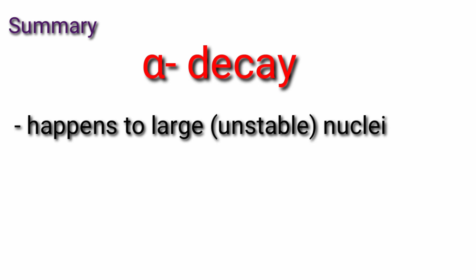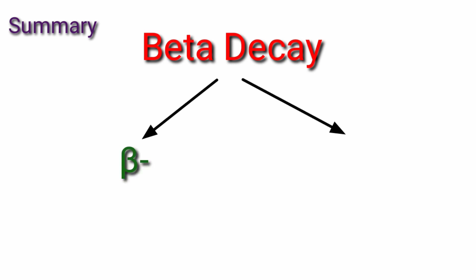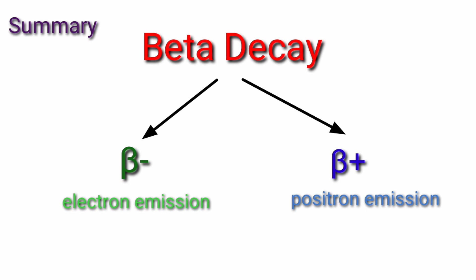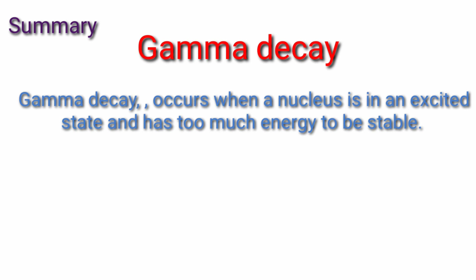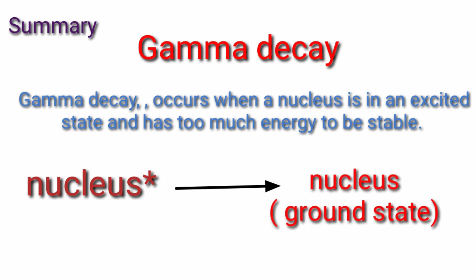To summarize: alpha decay occurs in large unstable nuclei where Coulomb force dominates the nuclear force. Beta decay occurs in two ways — beta-negative decay, where electrons are emitted when neutrons outnumber protons, and beta-positive decay, where positrons are emitted when protons outnumber neutrons. Gamma decay is the emission of high-energy nuclear photons or gamma rays from the nucleus when it transitions from an excited state to the ground state. In the next video, we will discuss the properties of alpha, beta, and gamma particles. Thanks for watching.